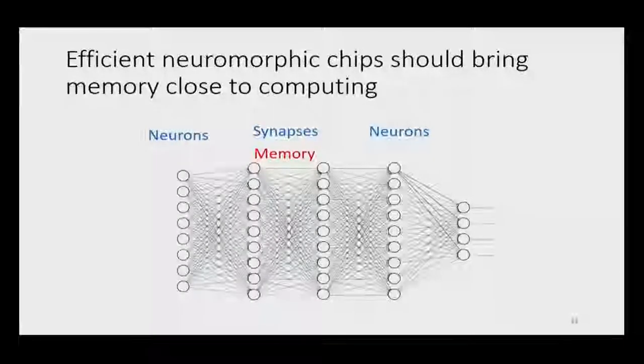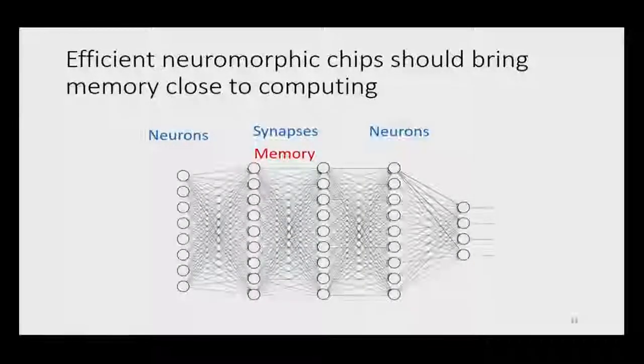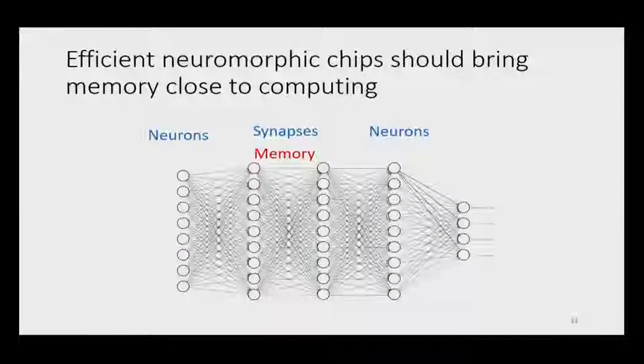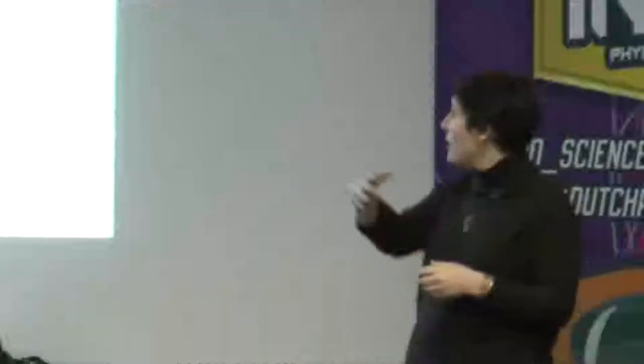This really makes sense to get inspiration from the brain to build energy-efficient neuromorphic chips. It means coming back to an architecture with physical neurons connected by physical synapses that enable memory right between the neurons. This avoids the transfer between logic and memory that consumes so much energy and slows devices down, and should enable real-time learning with very nice energy efficiency.